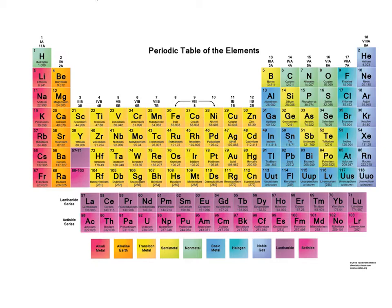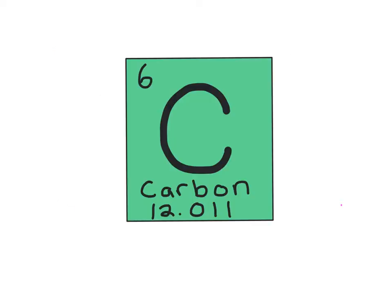Each square on the periodic table depicts an element. You can gain a lot of information from this square. For example, consider carbon. The symbol for the element is largest and resides in the center of the square, while the full name of the element sits either below or above the symbol, in this case below.